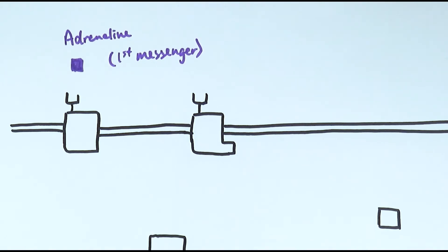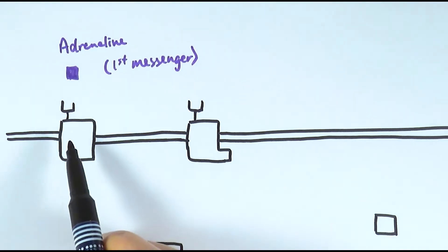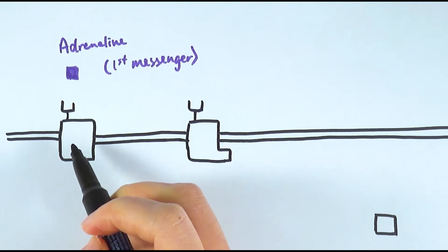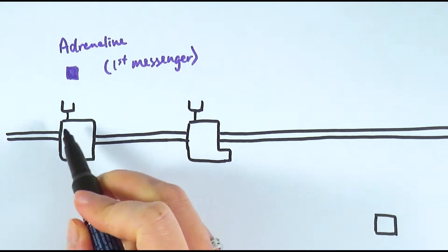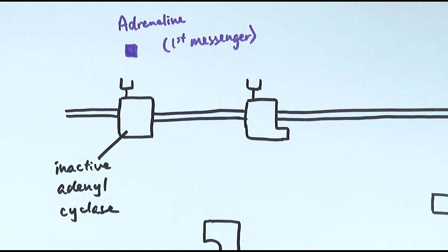Because adrenaline is a peptide hormone, they need to be received by or bind to a receptor on the cell surface membrane to signal the cell that they're there. The receptor is usually attached or is part of this particular intrinsic protein, and that protein is called adenyl cyclase.